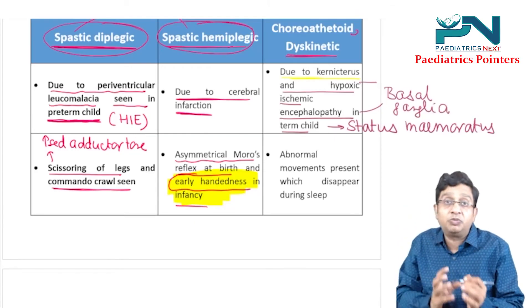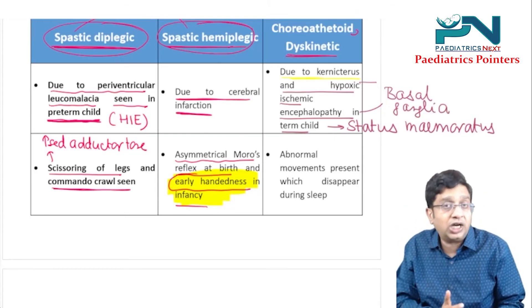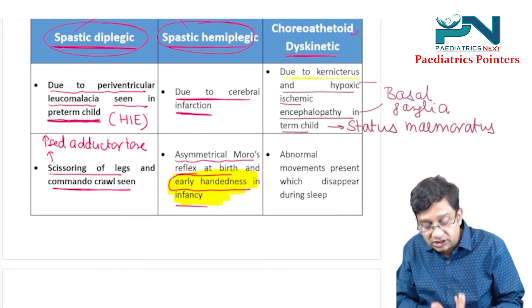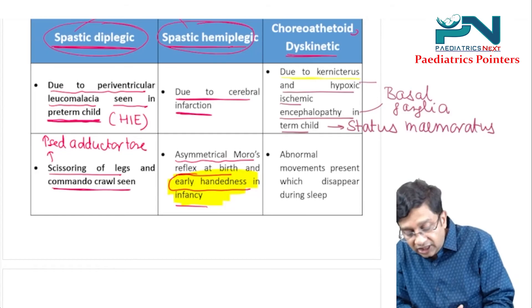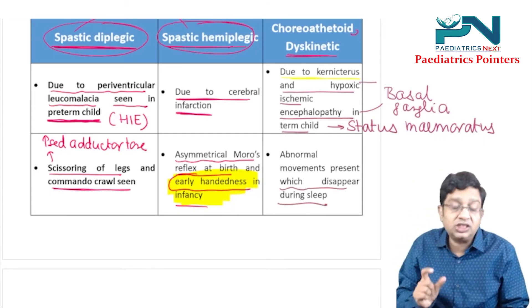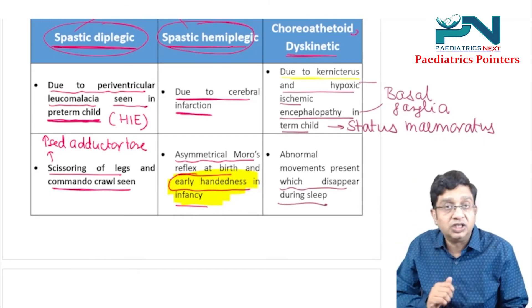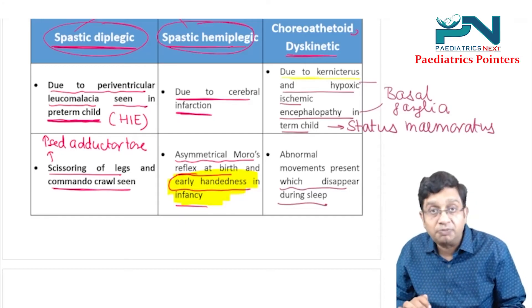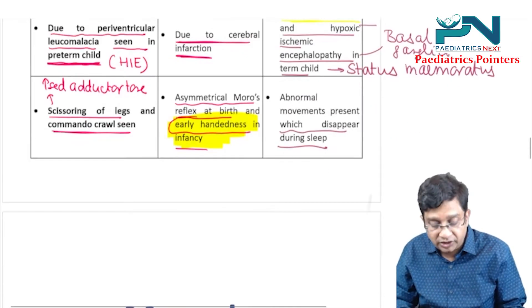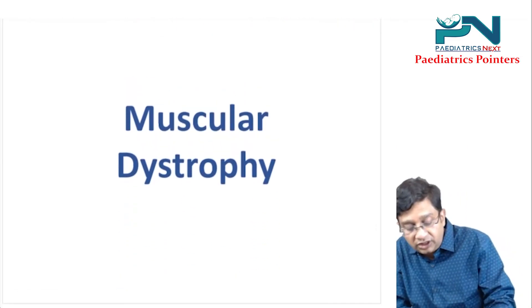Due to basal ganglia damage, there are abnormal movements called chorea. Chorea is present when the child is awake and disappears during sleep. This covers the major types of cerebral palsy. Now talking about muscular dystrophy.